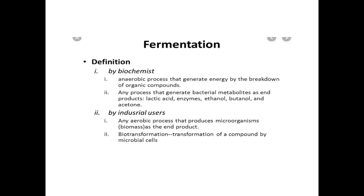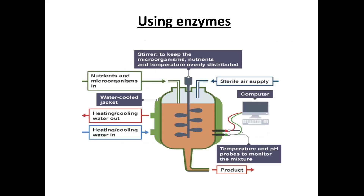Next is biotransformation — the transformation of a compound by microbial cells using enzymes. In a fermenter, a stirrer keeps the microorganisms, nutrients, and temperature evenly distributed. Nutrients and microorganisms enter via a sterile air supply. The fermenter is connected to a computer with temperature and pH probes to monitor the mixture, and whatever comes out is the product.